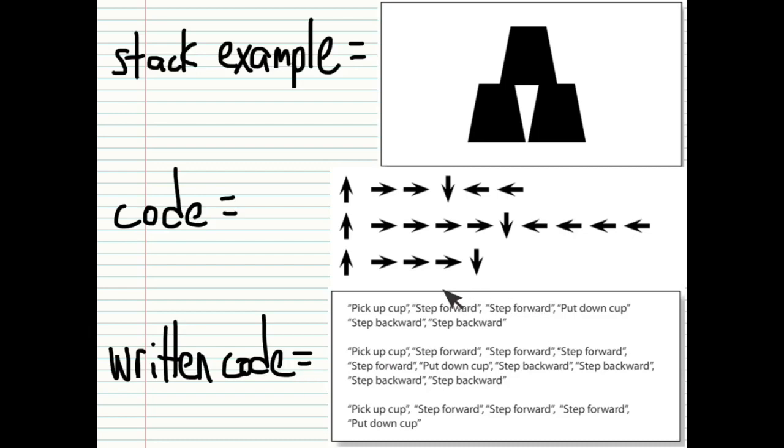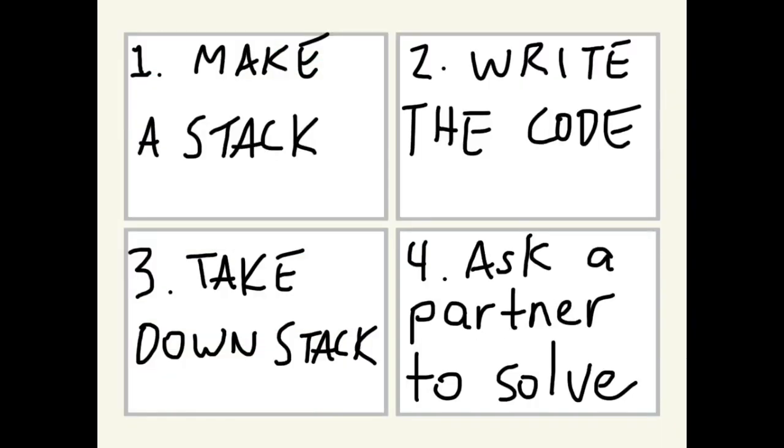And here you can kind of see the verbiage, the written code. And so basically, you're doing four steps. You've got making a stack. You've got writing the code in the symbols. And you've got taking down the stack. And then, of course, asking a partner or a robot to solve it.